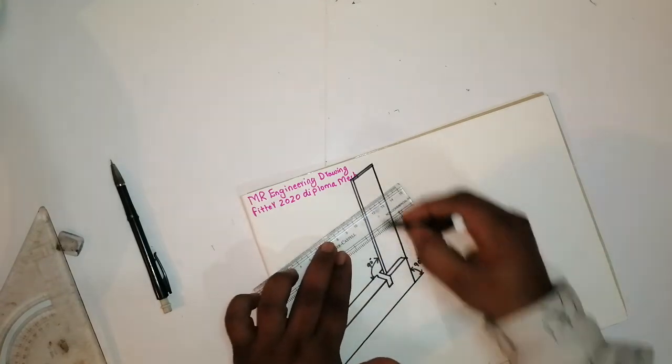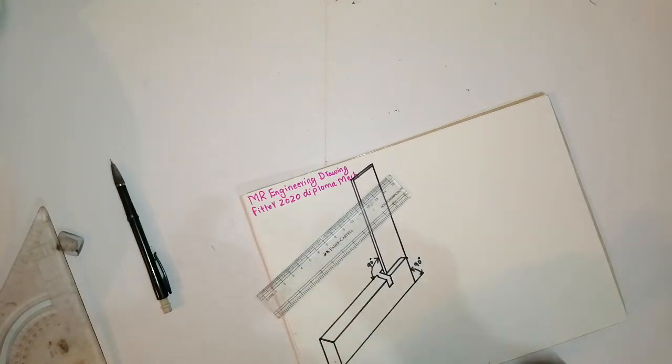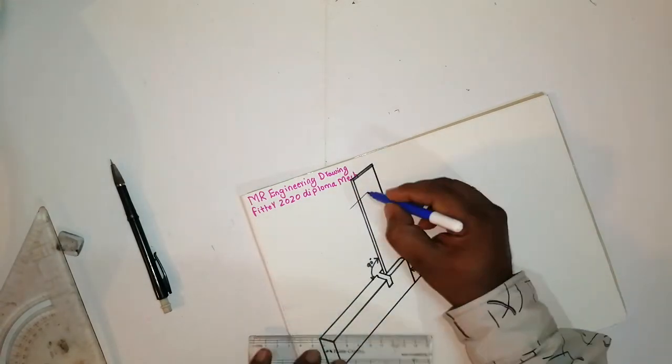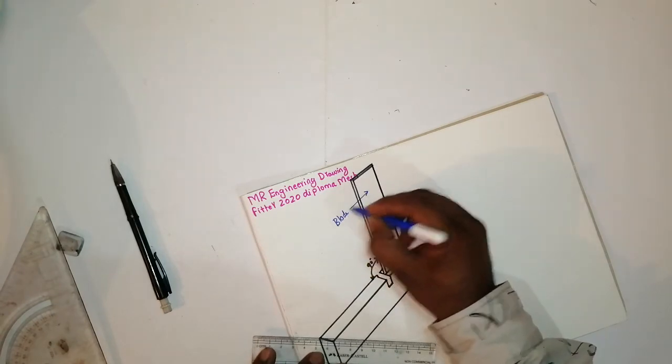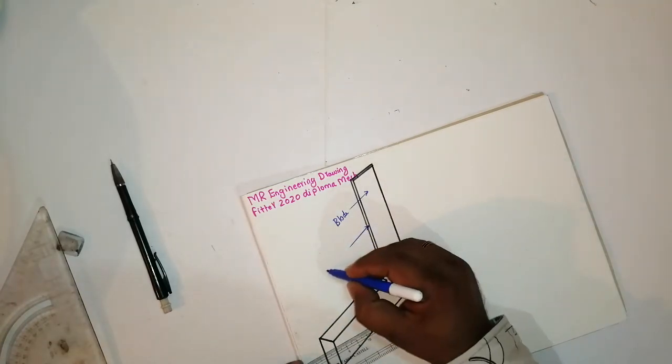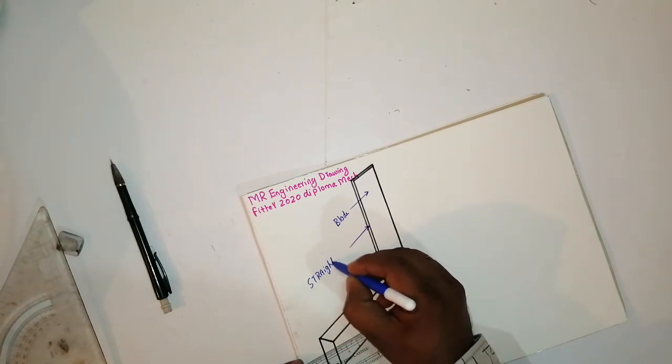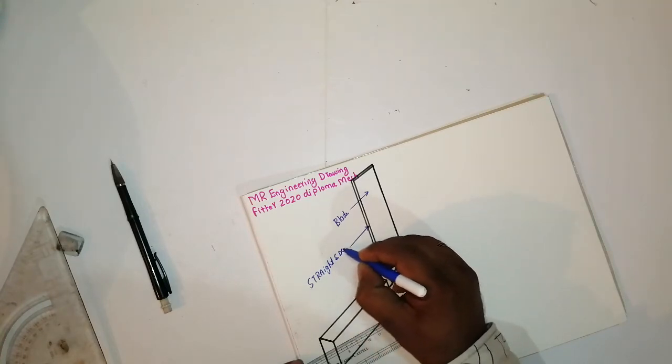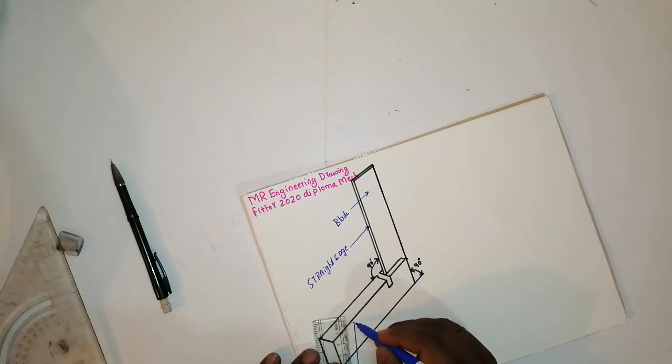So, I am aiming the path. I have taken like this. This is a blade. This is a straight edge. This I have taken a stroke.